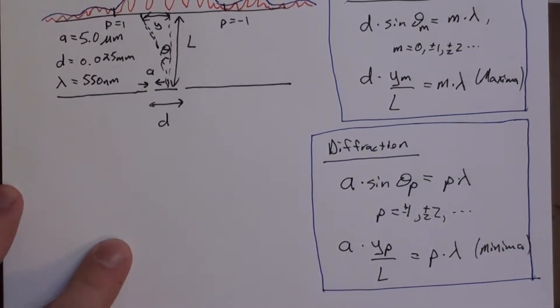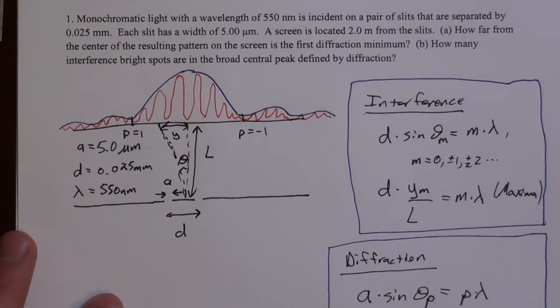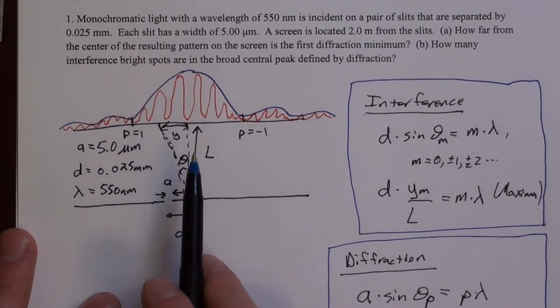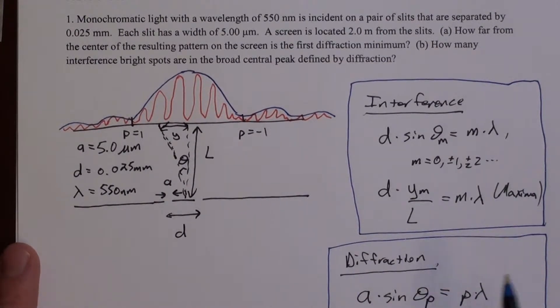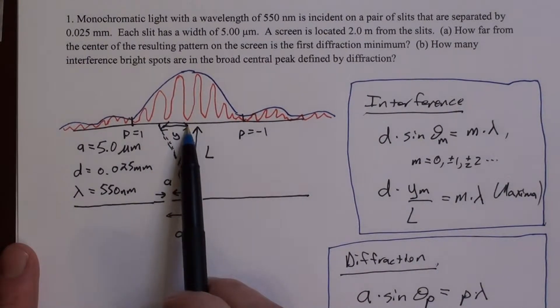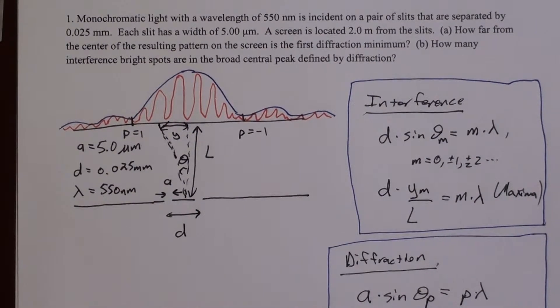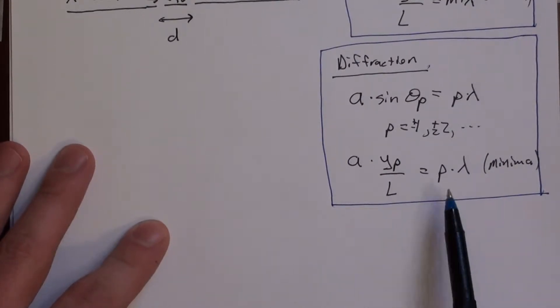So now we can read the question, now that we're fully prepped. So the first question is, how far from the center of the resulting pattern on the screen is the first diffraction minimum? So we're talking about diffraction, so we're going to use the diffraction equation. And we're looking for how far from the center is the first peak, so we're solving for a Y.